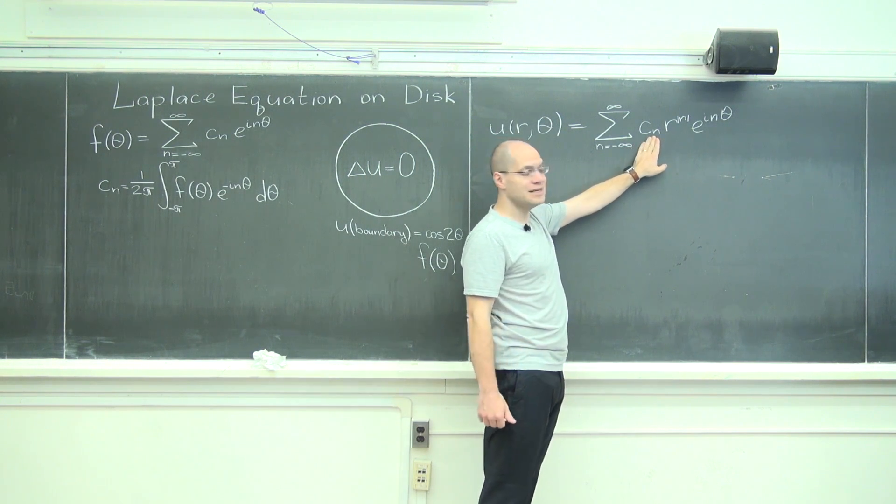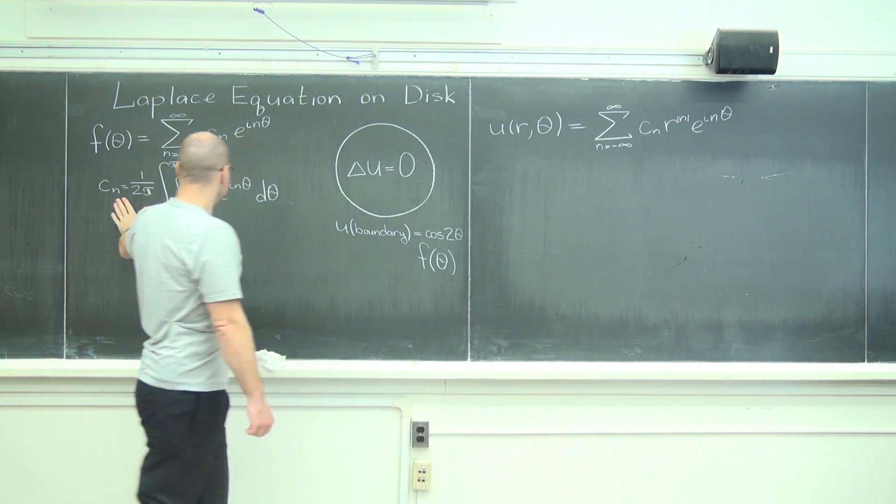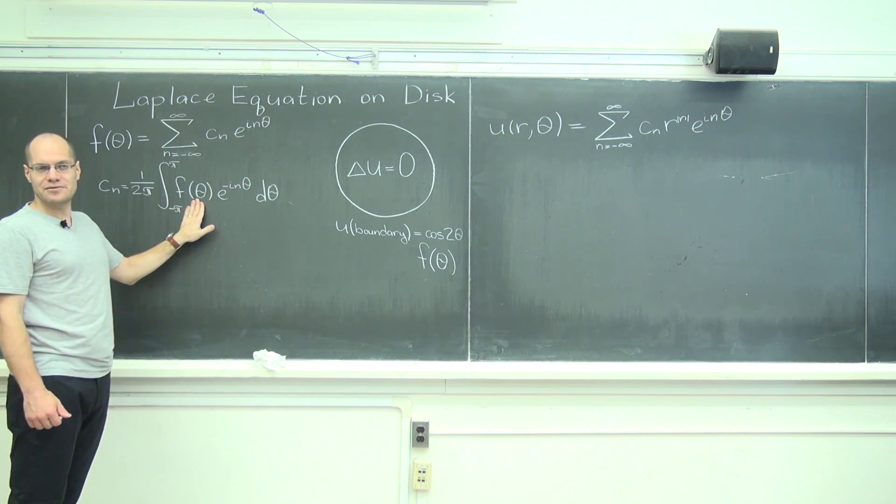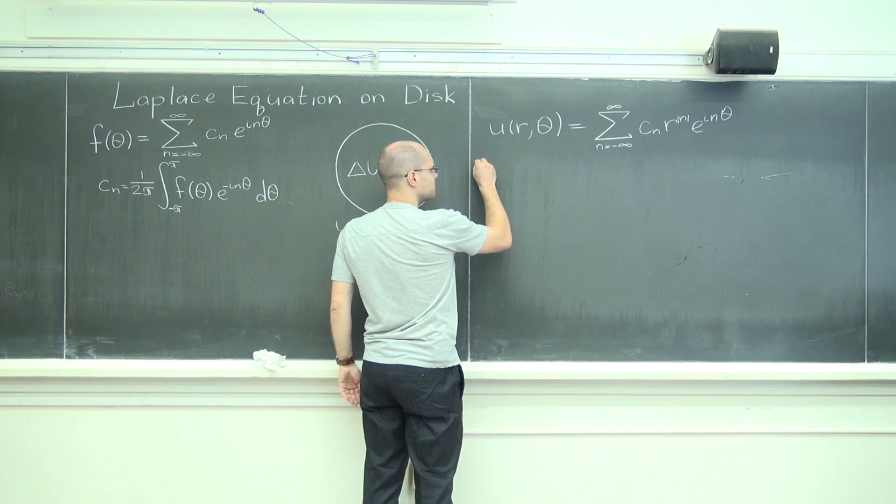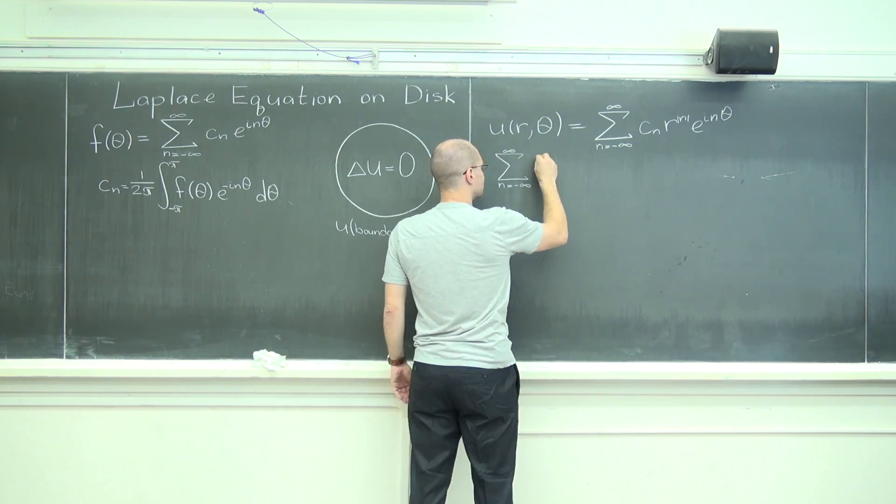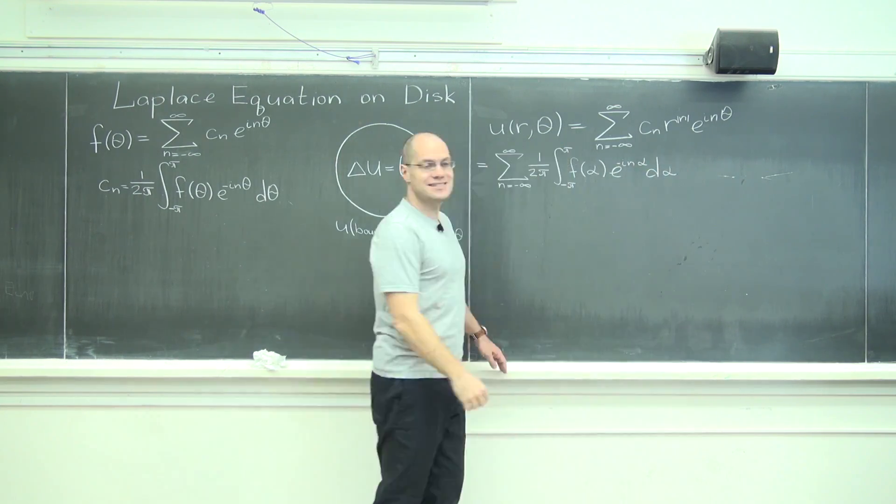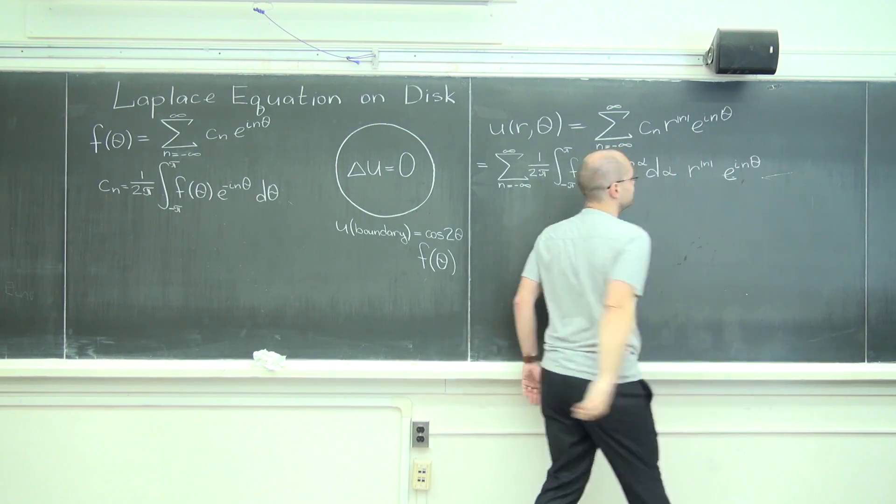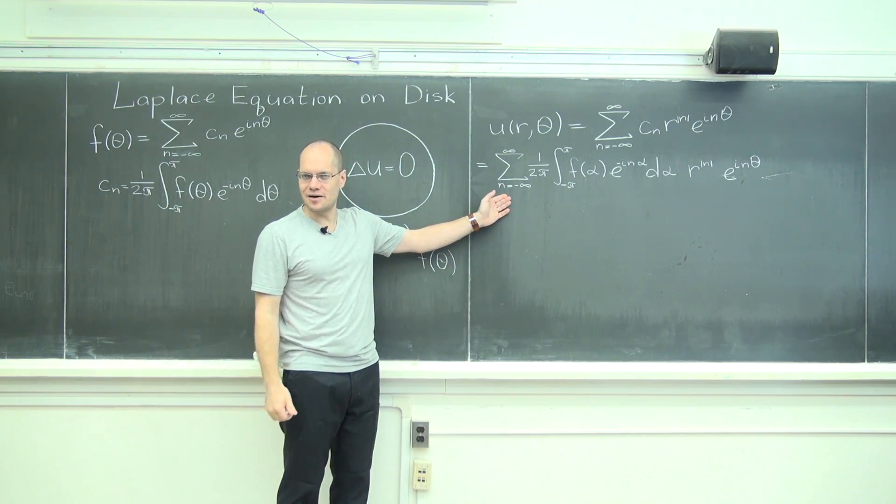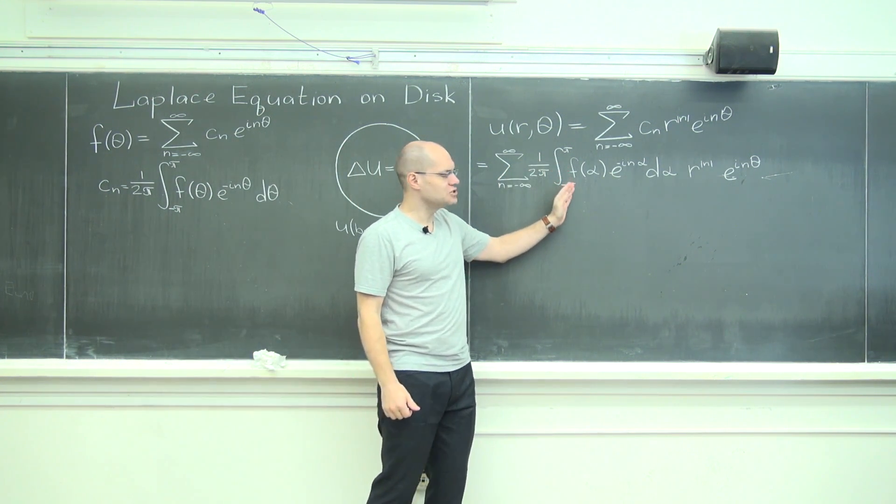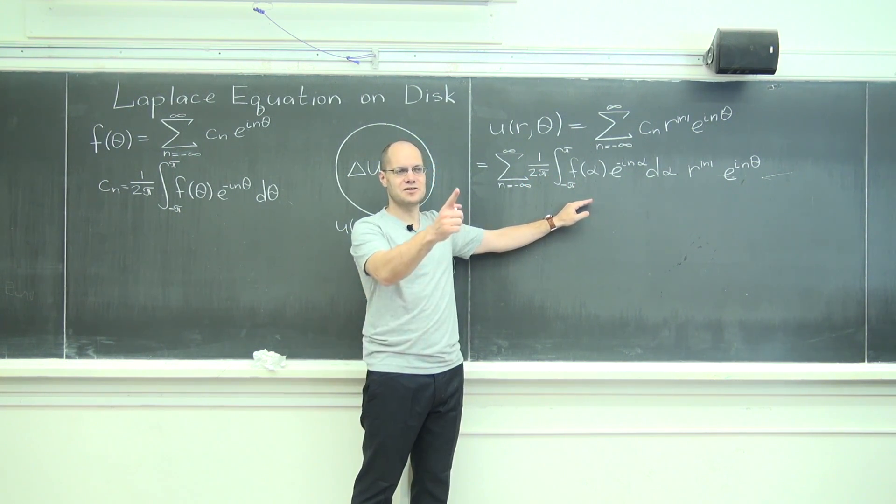Well now we can plug in what c sub n is, because we have a formula for c sub n for any boundary condition. It's the Fourier series of f of theta. So what we find... Pretty good. We have an infinite sum of a bunch of integrals. It's the sum of integrals.